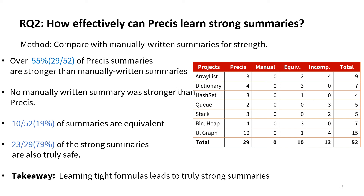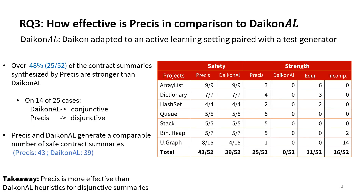Our results indicate that learning tight formulas leads to truly strong summaries. The last research question we discuss is the effectiveness of Prissy compared to DiCon AL. DiCon AL is DiCon adapted to an active learning setting paired with the test generator. We find that 48% of the contract summaries synthesized by Prissy are stronger than DiCon AL. Out of these 25 cases, on 14 cases Prissy synthesized disjunctive summaries while DiCon only synthesized conjunctive summaries, indicating that there is a need to synthesize disjunctive summaries. Prissy and DiCon AL generate a comparable number of safe contract summaries — Prissy 43 and DiCon AL 39. Results indicate that Prissy is more effective than DiCon heuristics for disjunctive summaries.